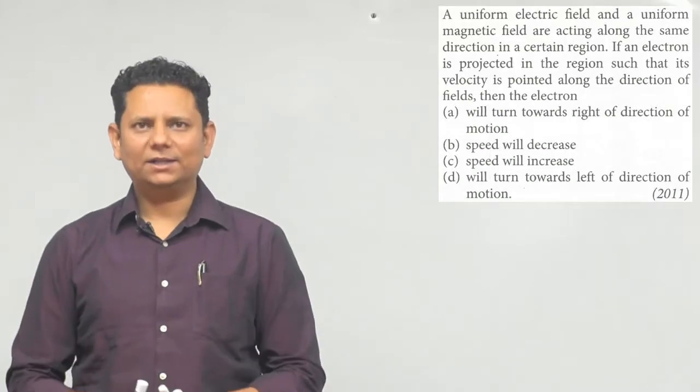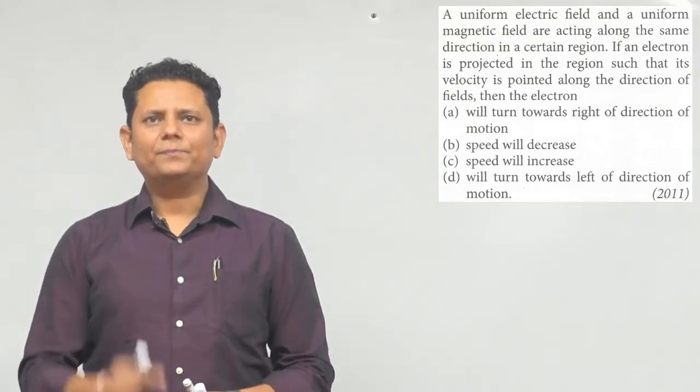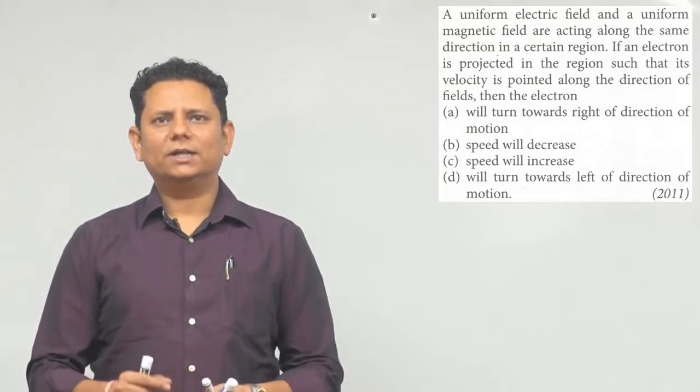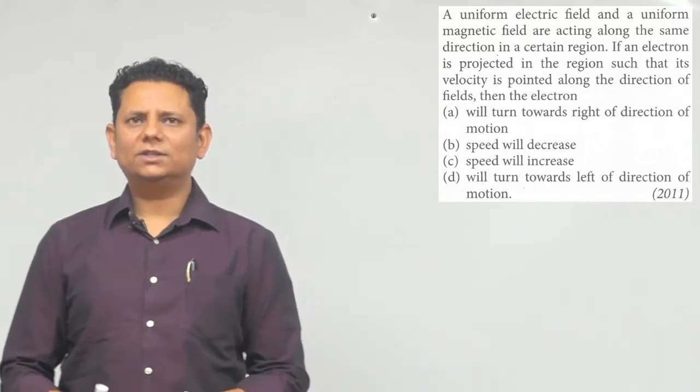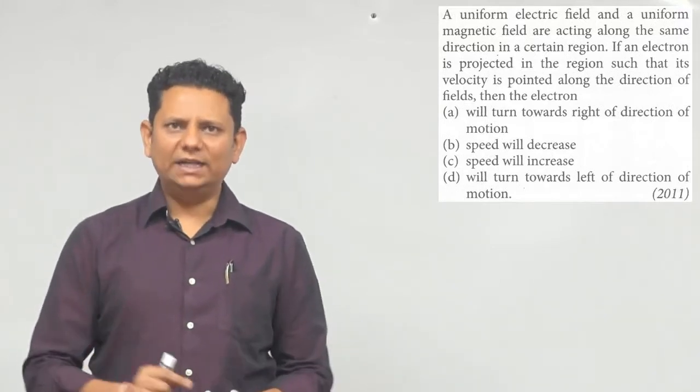Next question. A uniform electric field and uniform magnetic field are acting along the same direction in a certain region. If an electron is projected in the region such that its velocity is pointed along the direction of fields,